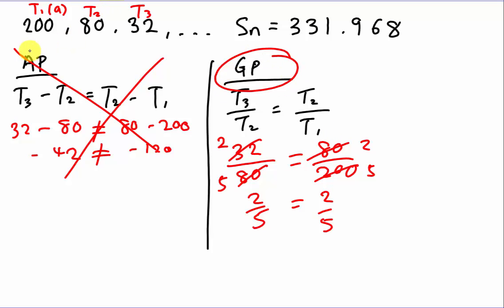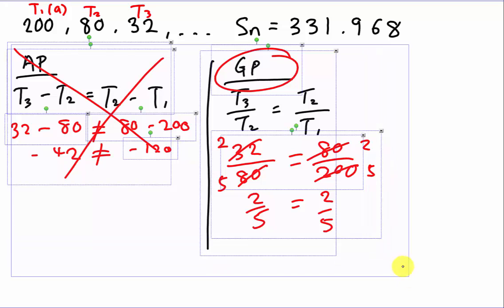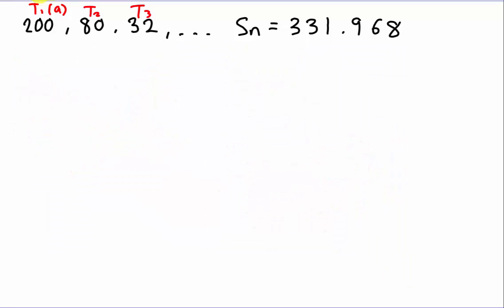This was just for explanation. In the exam, you must know how to solve the question. You can assume the examiner already knows it's GP, so you straight away find the ratio R. Maybe use 80 divided by 200. You don't need to differentiate between AP and GP in your exam — it's unnecessary — unless the question asks you to show that it's in geometric progression.